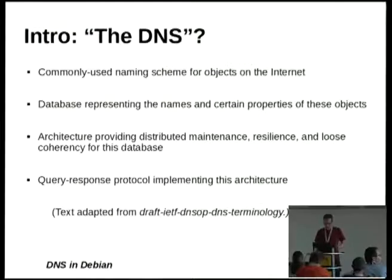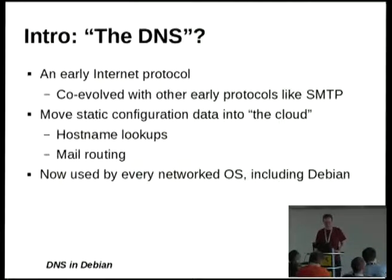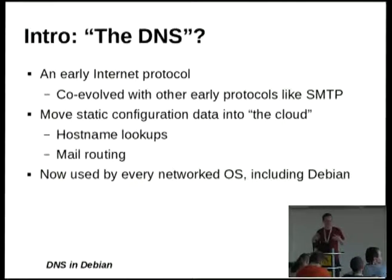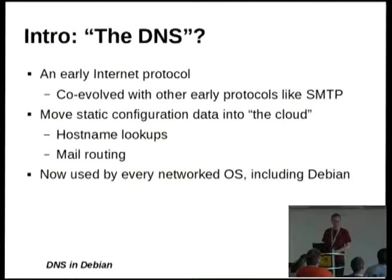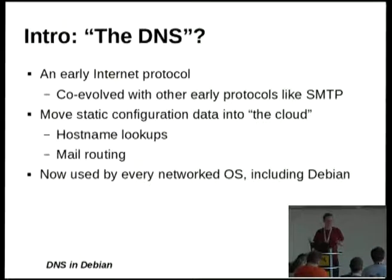Here's my second slide — the more nuts and bolts definition. The DNS dates back to the early 80s, this early experimental era of the Internet, and it co-evolved with other early protocols from that era, like SMTP. The big reason for it was to move static configuration data — like the hosts.txt file — into what we'd now call the cloud. There was a lot of weird stuff around mail in this era. It eventually evolved forward and is now used by every operating system that connects to the Internet, including Debian.